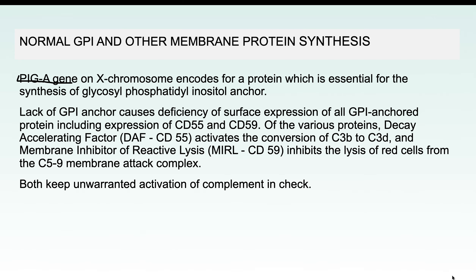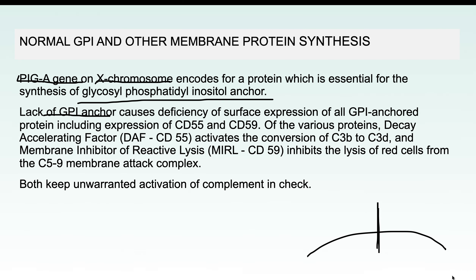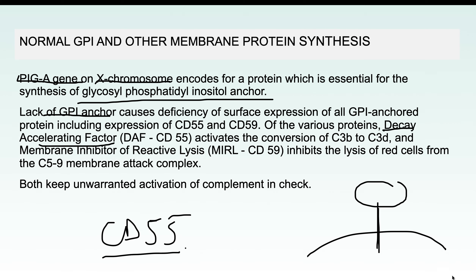There is a gene known as the PIGA gene, present on the X chromosome, which is important for encoding the GPI anchor. When there is a lack of GPI anchor, CD55 and CD59 cannot express themselves on the cell surface. CD55 is also known as Decay Accelerating Factor (DAF), and CD59 is known as Membrane Inhibitor of Reactive Lysis (MIRL). Without their expression, they cannot control complement system activation, leading to lysis of red blood cells.